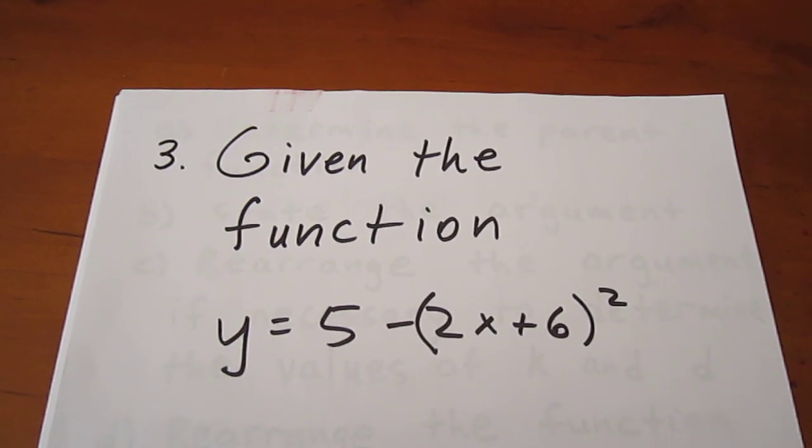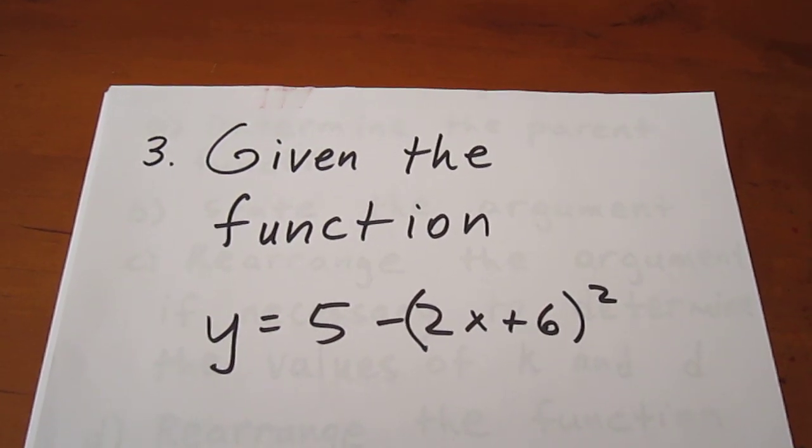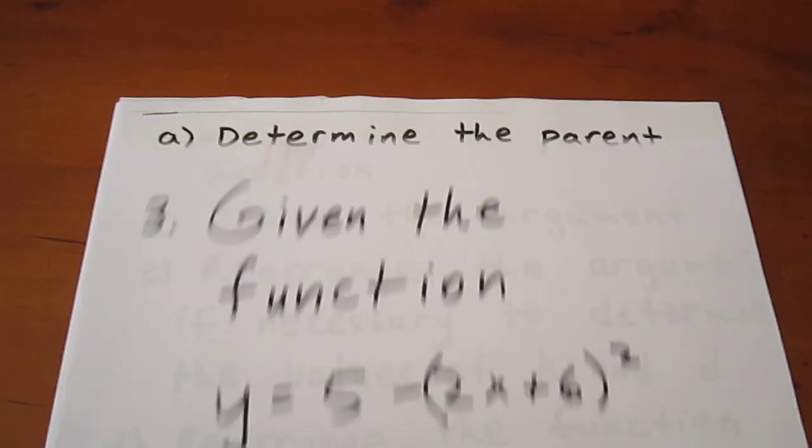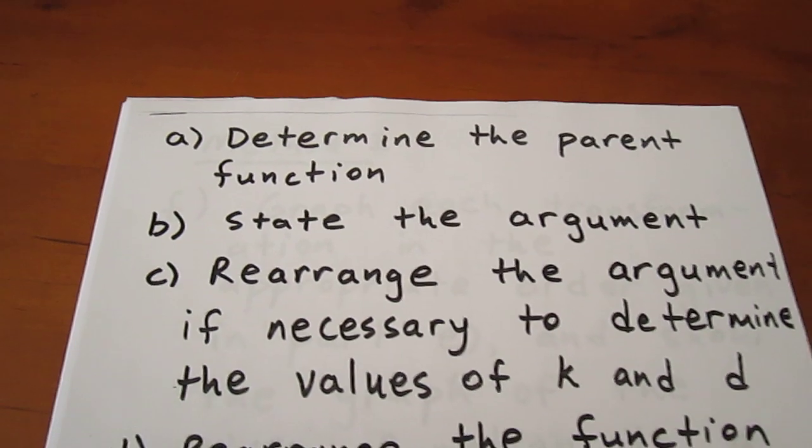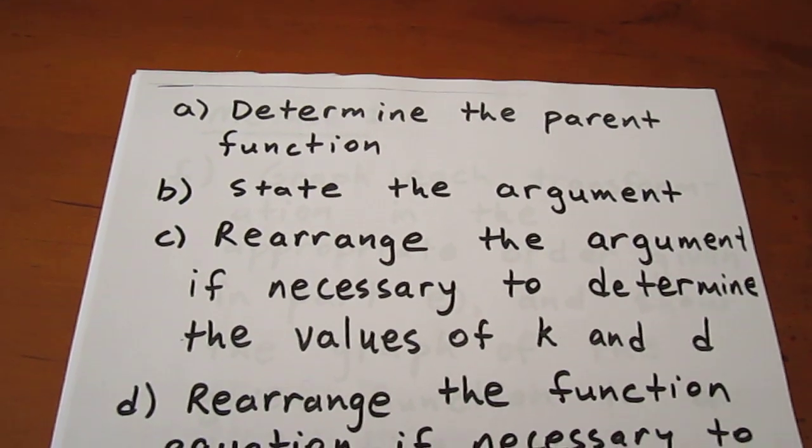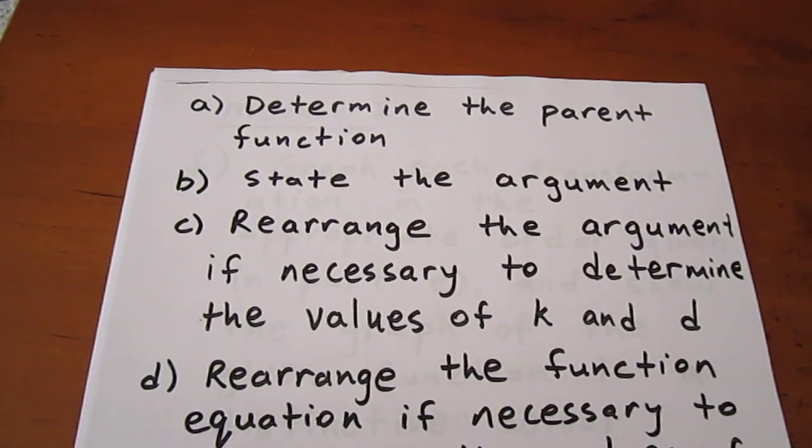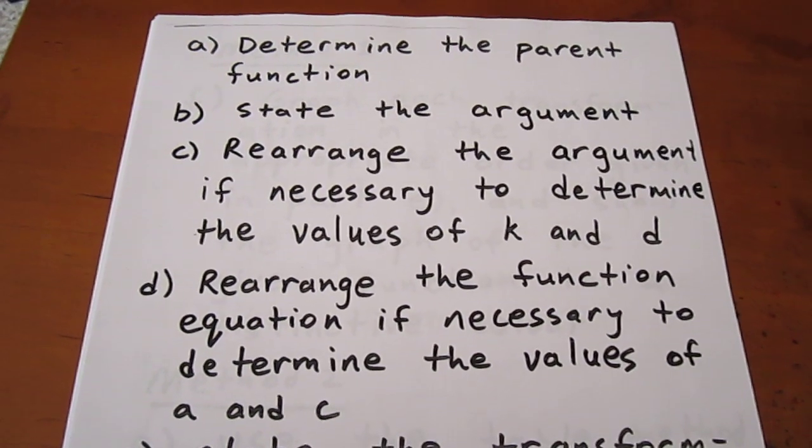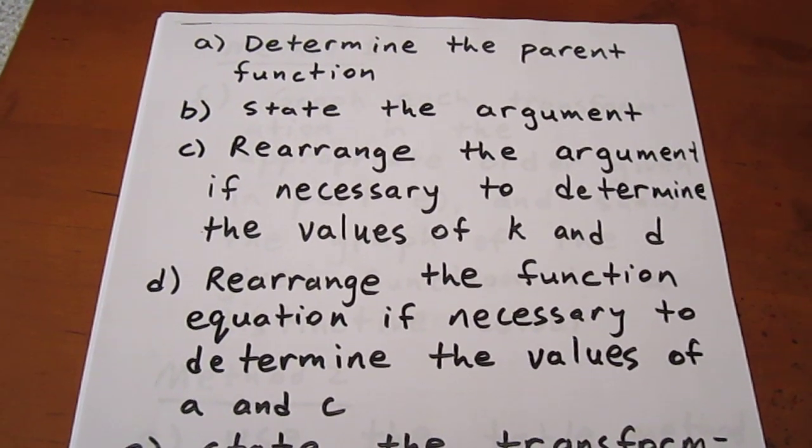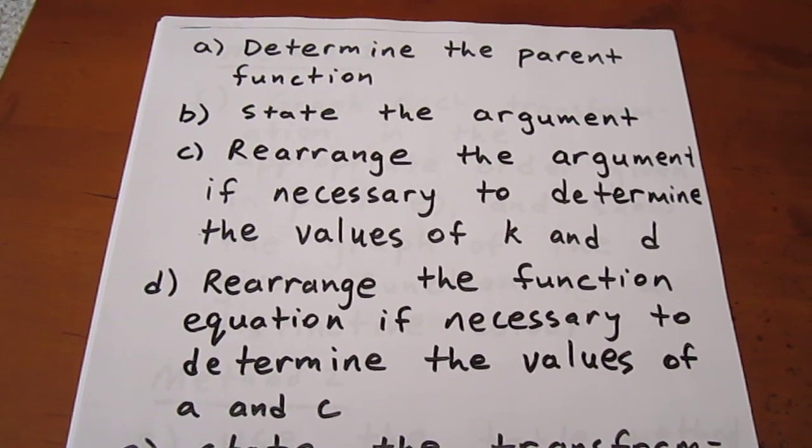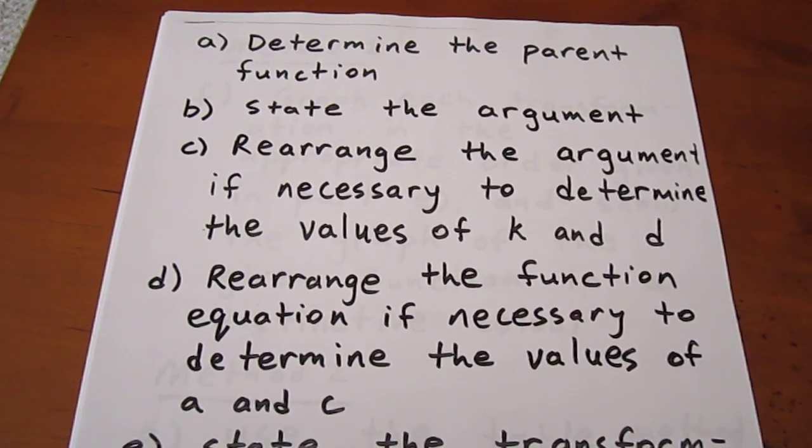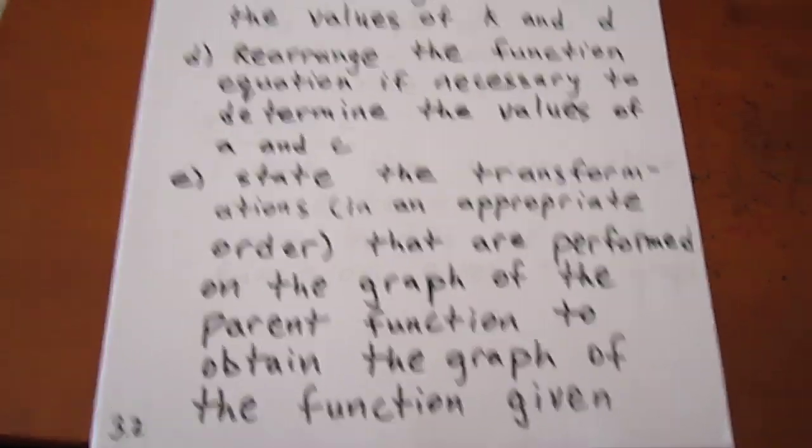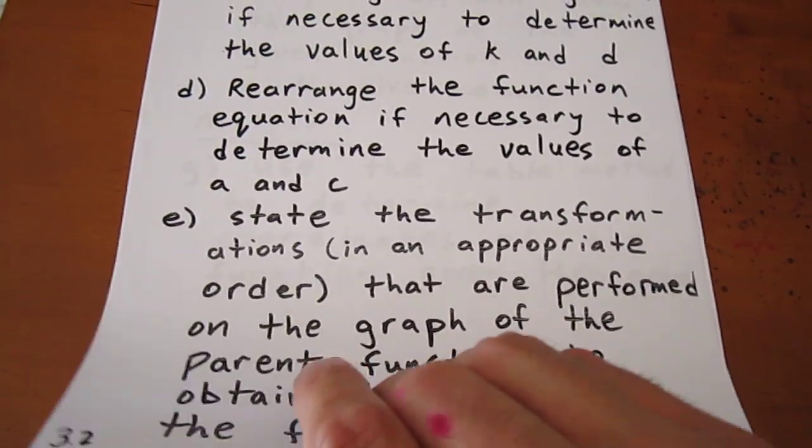We'd like to graph the function y equals 5 minus quantity 2x plus 6 squared. We're going to do this by determining the parent function, stating the argument, rearranging the argument if necessary to determine the values of the variables that affect horizontal transformations, then rearranging the function equation if necessary to determine values of a and c which affect vertical transformations. Then we're going to state the transformations in an appropriate order.